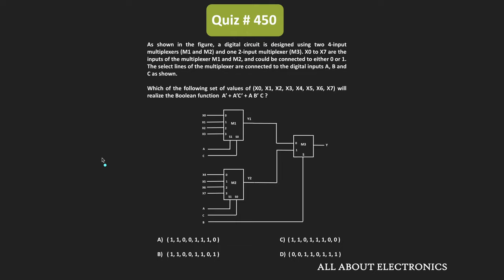Here, M1 and M2 are the 4x1 multiplexers, while M3 is the 2x1 multiplexer. As you can see, x0 to x7 are the inputs to multiplexers M1 and M2, and A, B, and C are the selection inputs. Basically, with the help of these three multiplexers, the 8x1 multiplexer has been implemented.